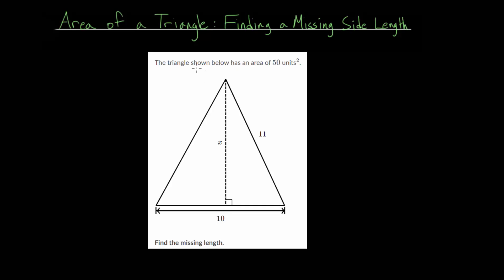So for this example problem, the triangle shown below has an area of 50 square units, so we can write that down, and we need to find a missing side length, specifically the height of our triangle here.